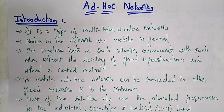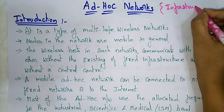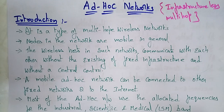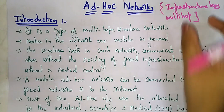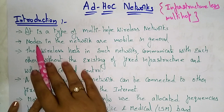Hi students, now coming to the exact topic: ad hoc wireless networks. In the previous video I gave an introduction about wireless networks — infrastructure networks and infrastructure-less networks. From that video, what you understand is that an ad hoc network is an infrastructure-less network which acts as multi-hop. Infrastructure-less means there is no need for intermediate devices; it is just a signal.